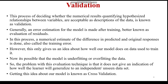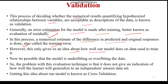Validation is a process of deciding whether the numerical results quantifying the hypothesis relationship between variables are acceptable or not, or if they need further improvement. An error is an estimation for the model made after training, better known as evaluation of residuals. In the validation process, a numerical estimate of the difference between the predicted and original responses is done, also called the training error. This gives us an idea about how well our model does on data used to train it. It is possible that the model is underfitting or overfitting, so with the evaluation technique we have to get an improved, generalized model on unseen data - this is basically known as cross-validation.